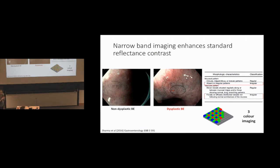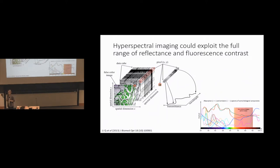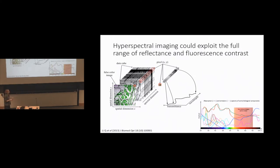If this three-color imaging can already enhance contrast, could we take it further and actually extract quantitative numbers — for example, blood concentration and oxygenation? To do that, we'd need to measure data at more than just a few narrow wavelength bands. One way to do that is hyperspectral imaging, where you record not only the spatial dimensions of the image but also the wavelength dimension at the same time. Instead of having a 2D image, you have a 3D image where each individual pixel has a wavelength profile associated with it. We can then use this spectral information to map out the absorption of different hemoglobins, distinguishing oxy from deoxyhemoglobin, and also detect fluorescence emissions from the tissue.